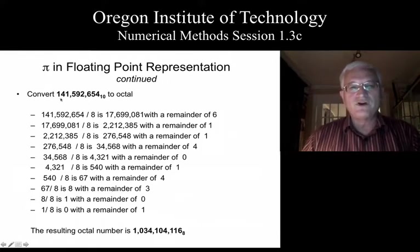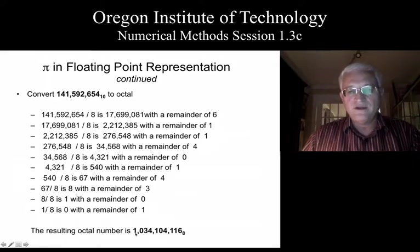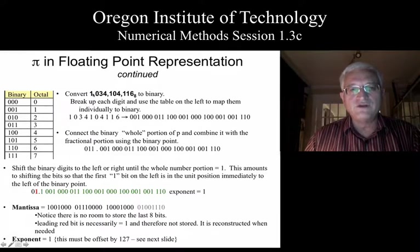Now that we've converted this decimal fractional portion of pi to its equivalent octal portion, we now need to get it into binary. Well, fortunately, that's not so hard. We can use that column-by-column approach, using this table that we saw earlier, to simply break up every octal digit into groups of three binary digits.